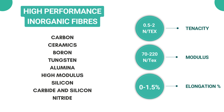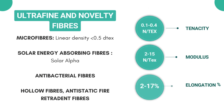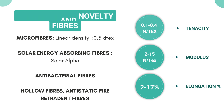The fifth and last category is ultrafine and novelty fibers. These include microfibers with a linear density of less than 0.5 decitex, solar energy absorbing fibers like Solar Alpha, antibacterial fibers, hollow fibers, anti-static fibers, and fire-resistant fibers. They have the lowest tenacity and modulus but a higher elongation range, and have very specific applications.